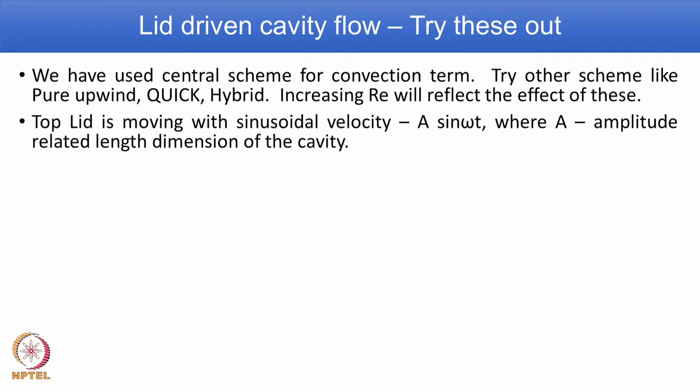Hence, you can try changing the code from central differencing scheme to any one of these schemes and try increasing the Reynolds number to understand yourself the behavior of these schemes for different Reynolds numbers for the same set of mesh. In the problem demonstration, we have used top lid moving with a constant velocity, for example u equals 1 meter per second.